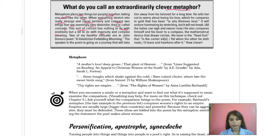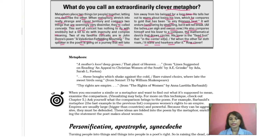Two of my favorite conceits are in John Donne's poem. John Donne was a metaphysical poet, and his poem 'A Valediction: Forbidding Mourning' features a speaker going on a journey that will take him away from his beloved for a long time. He tells her not to worry about losing his love, which he compares to gold that has been to 'airy thinness beat' — it will endure hammering by stretching but will not break. He also compares himself and his lover to a compass — the mathematical device that draws circles — with his lover as the fixed foot in the center. Yet when the other far doth roam, it leans and harkens after it. How clever!